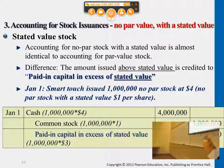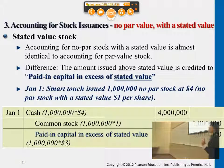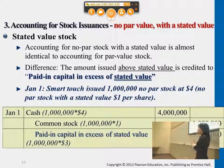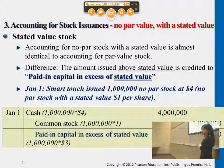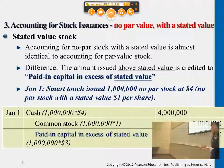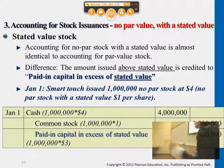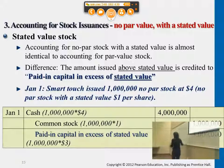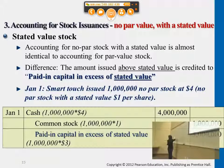If the stated value is $1 and the market price is $3, then the difference is considered a premium. We call it paid-in capital in excess of stated value. So the only difference between this and the first case is 'in excess of stated value' rather than 'in excess of par-value' for this account.